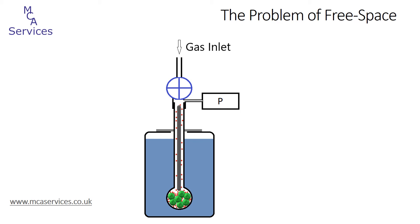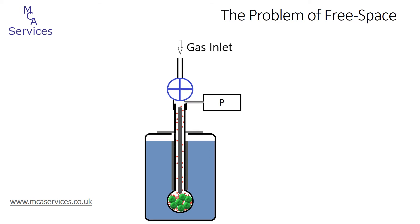Using Micromeritics instruments also means that we can insert isothermal jackets. These sit around the outside of the analysis tube and act as a wick, maintaining a constant cryogen level. This means that thermal stability and accuracy of the free space measurement are constant throughout the analysis, even as the level of liquid nitrogen naturally falls over time due to evaporation. Improvements in instrumentation mean that the lower limit at which nitrogen can be confidently used for surface area measurement has fallen dramatically. A few decades ago surface areas below 10 square meters per gram were considered difficult to measure; now we can comfortably and confidently measure below one square meter per gram with nitrogen.